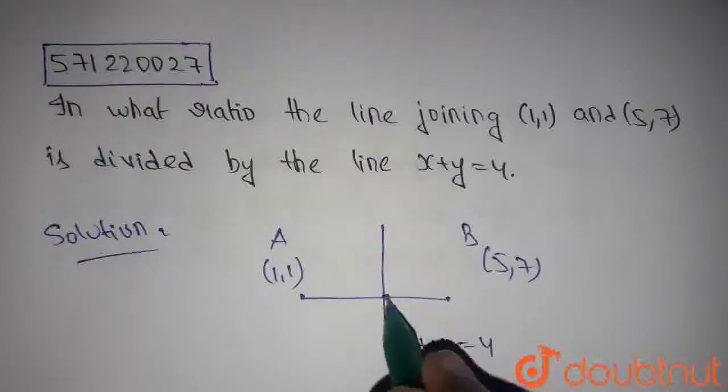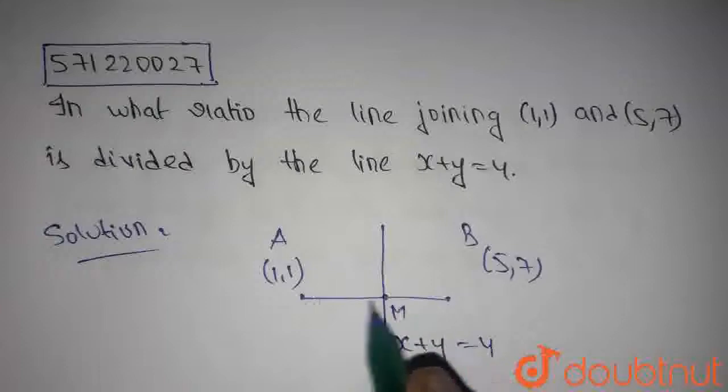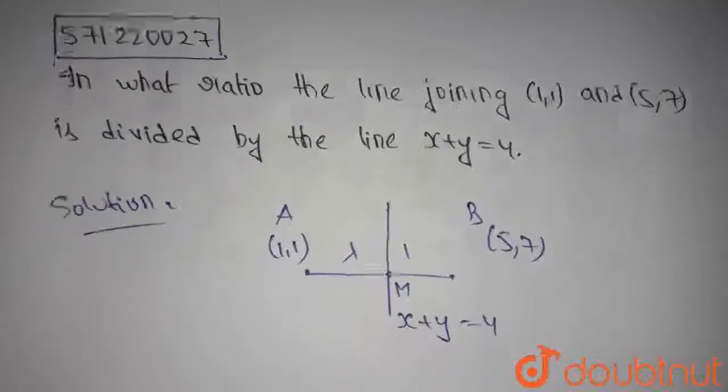This line intersects the line segment AB at the point M, and say point M divides AB in the ratio lambda is to 1.